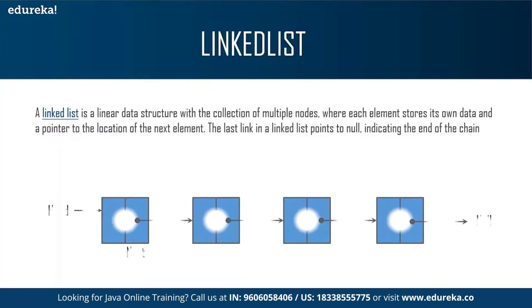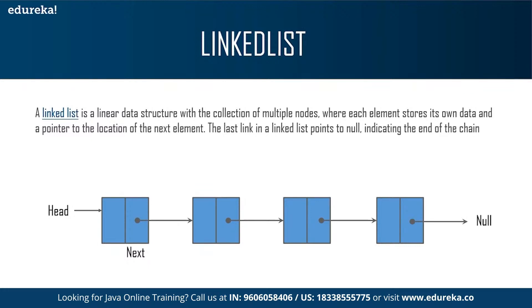The next data structure is linked list. A linked list is a linear data structure with a collection of multiple nodes where each element stores its own data and a pointer to the location of the next element. The last link in the linked list points to null, indicating the end of the chain. An element in the linked list is called a node. The first node is the head and the last node is the tail. There are three types of linked list: singly linked list — unidirectional, containing only information of the next node; doubly linked list — containing information of the next node and also a pointer to the previous node; and circular linked list — where the head points to the tail and the last node points to the first element of the first node.